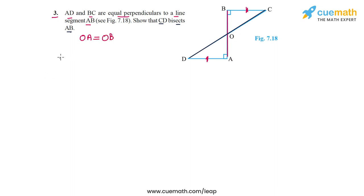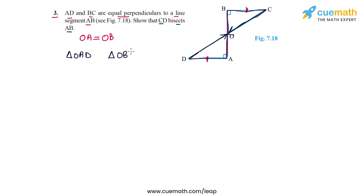To do this, we are going to show that triangle OAD — which is this triangle I'm highlighting — is congruent to triangle OBC — which is this triangle I'm highlighting now.